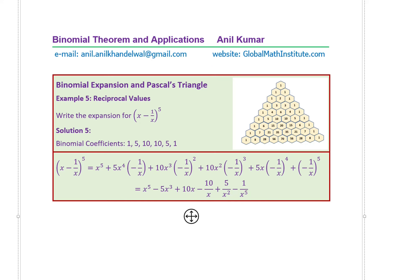Example 5: how do we expand when reciprocals are involved? Write an expansion for (x − 1/x)⁵. Be careful about the alternating negative signs. To the power of 5 means you're looking at the sixth row where the coefficients are 1, 5, 10, 10, 5, 1.